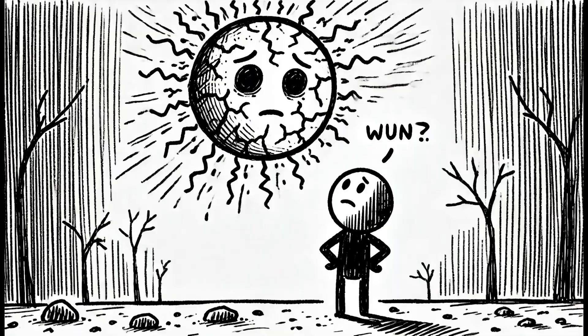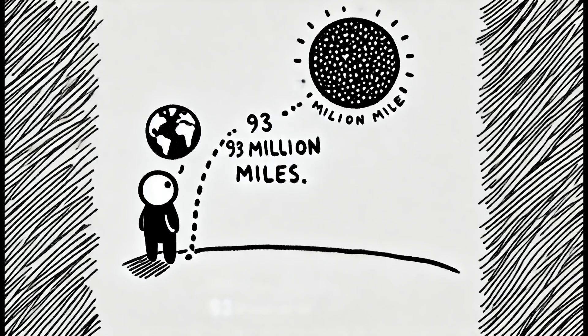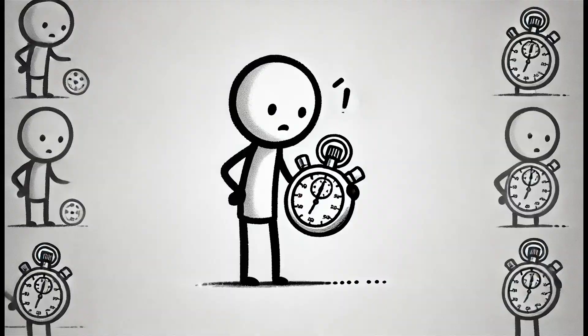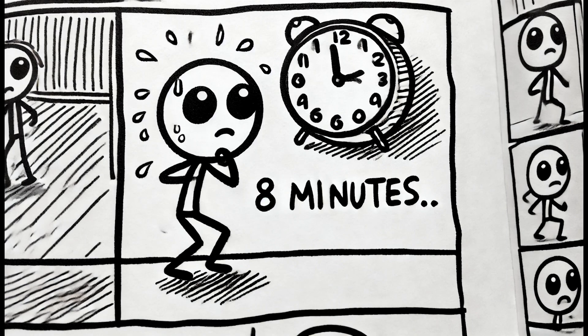But here's the thing, if the sun did explode, we wouldn't know right away. That's because the sun is about 93 million miles away from us, and it takes light about 8 minutes to travel from the sun to Earth. So we'd have exactly 8 minutes of normal life before everything changed.